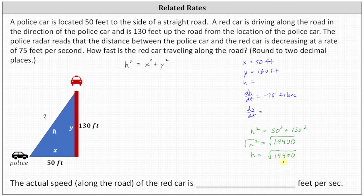We don't need to simplify this, but we can. 19,400 is equal to 100 times 194. The square root of 100 is equal to 10. We can also express H as 10 square root 194. But again, simplifying here is not required.